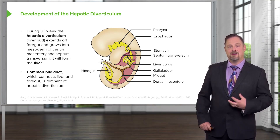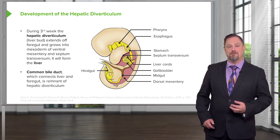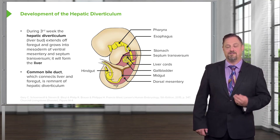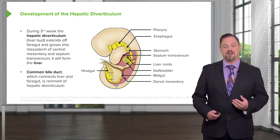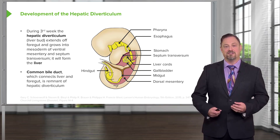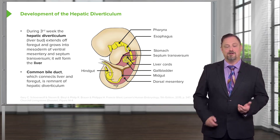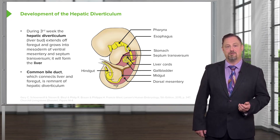The connection of the hepatic diverticulum to the foregut is going to become the common bile duct. In the mature anatomy, the common bile duct does indeed connect the liver to the foregut at the descending portion of the duodenum.